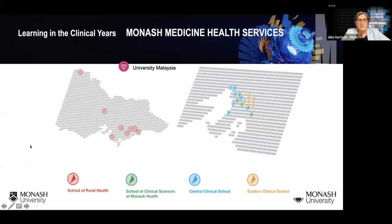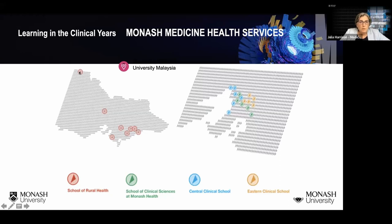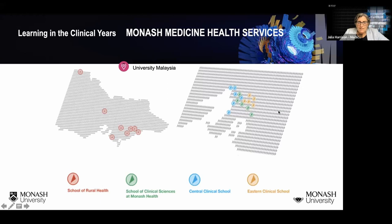The latter three years take place in hospitals. We have quite a number of partner hospitals with a Monash Uni hub within each. Rural sites include Mildura, Bendigo, Bairnsdale, Sale, Warragul, Wonthaggi and others. Metropolitan sites include the Alfred Hospital, Sandringham Hospital, Monash Medical Centre, Dandenong Hospital, Casey Hospital, Box Hill Hospital, Maroondah Hospital, the Angliss, and more.